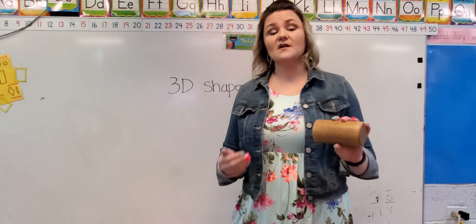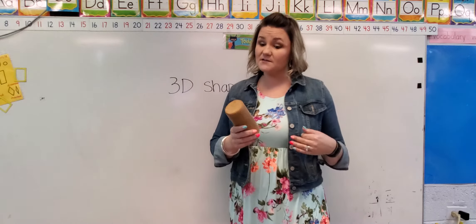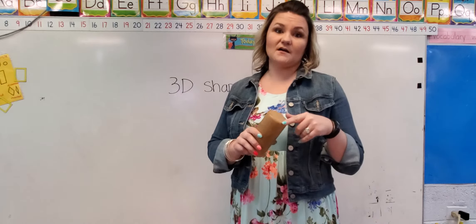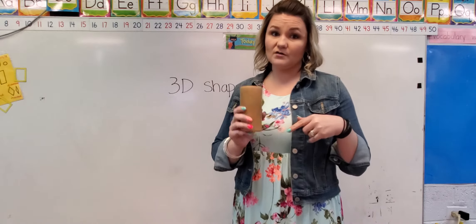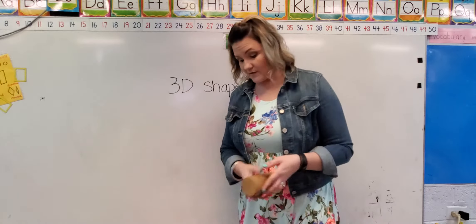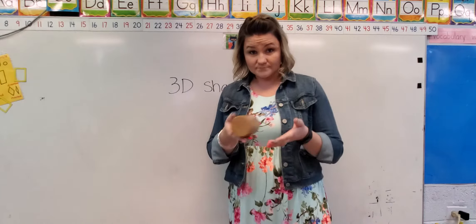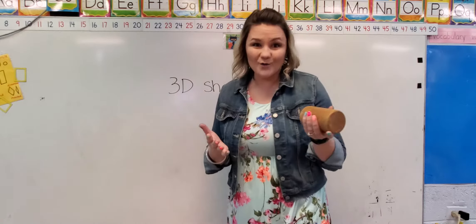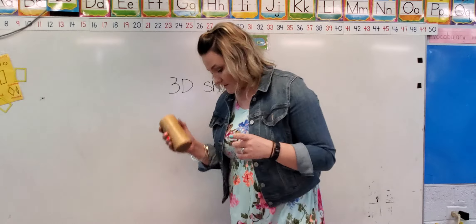So when you're talking about the attributes of a 3D shape and you're talking about a cylinder, you're going to talk about it's got two circular faces. Sometimes we talk about how they move. Obviously, a cylinder is going to roll. Pretend I'm a table. They roll. So we can talk about a cylinder.